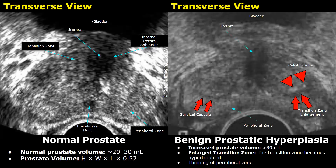In this case of BPH, calcifications are also present in the transition zone. The transition zone is enlarged, and this hypoechoic line between the transition zone and the peripheral zone is the surgical capsule. The peripheral zone appears thin as compared to the peripheral zone in the normal image.